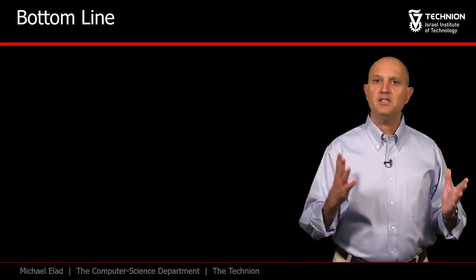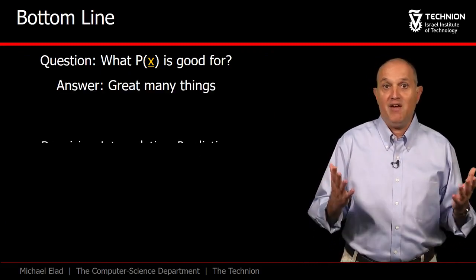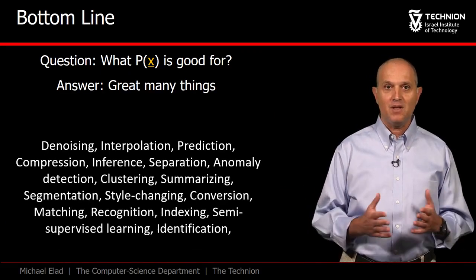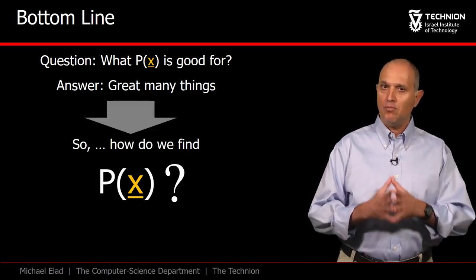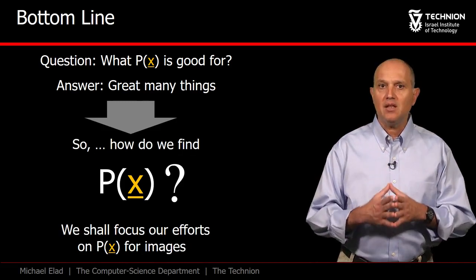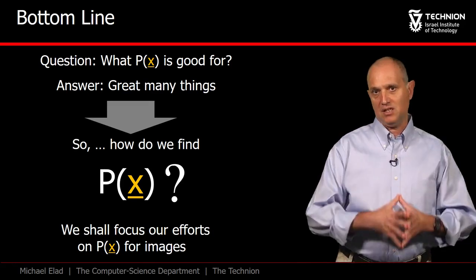The bottom line is this. We were wondering what P of x could be good for, and the answer is practically everything we do on signals. The next natural question to ask is therefore, how shall we get P of x? More specifically, how shall we get the probability density function P of x for images? This is the topic we discuss next.